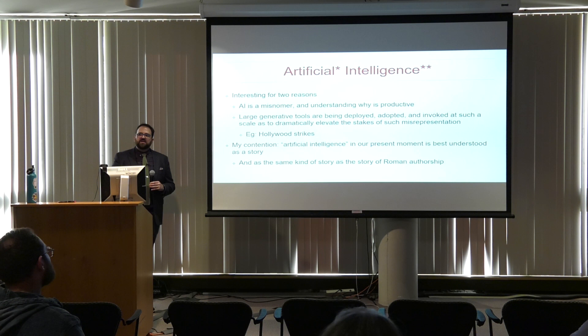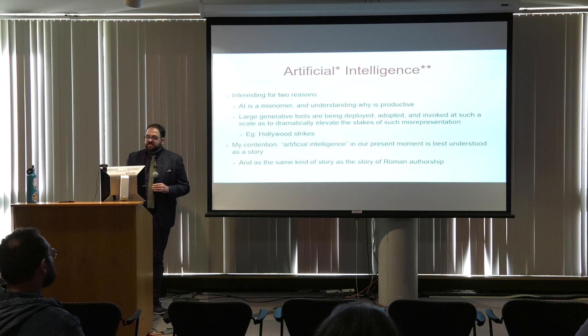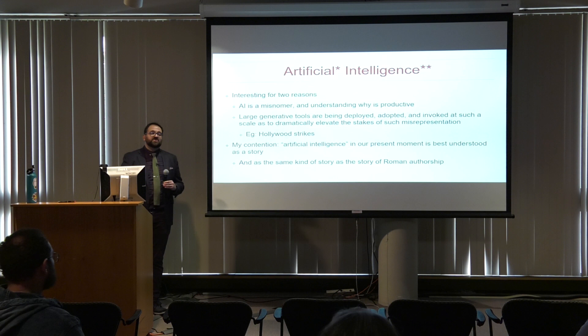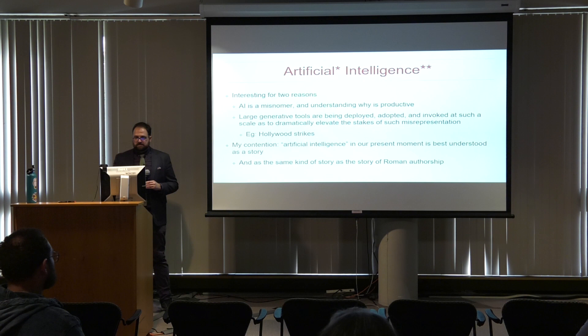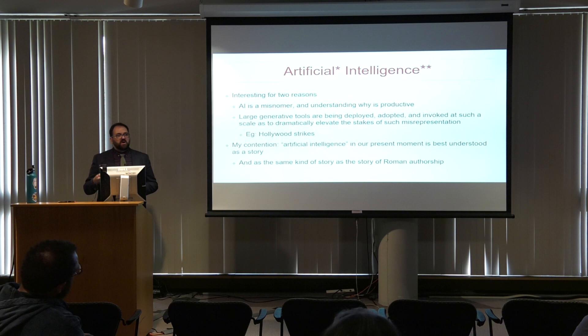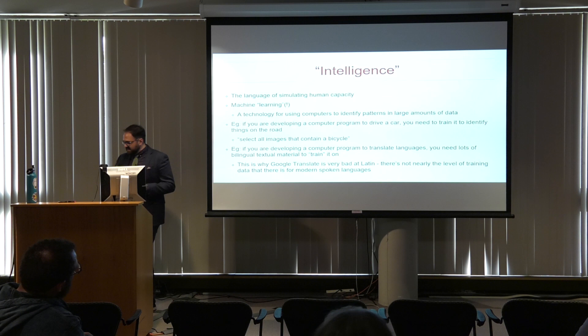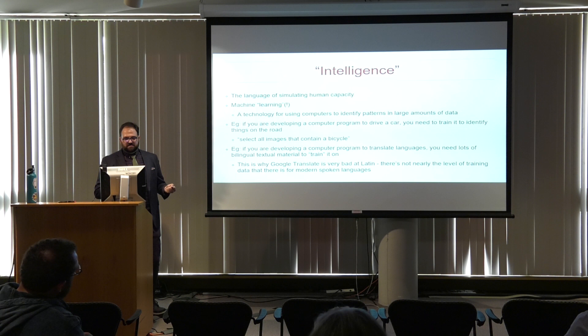Caesar was accustomed to dictate to his secretaries four letters at once on four different topics — you can imagine him with a row of secretaries, walking up and down the line dictating, tracking four different letters in his head. This is truly remarkable. What I think is going on is an idea that the intellect of the great man is so powerful that it exceeds the bounds of its own body — it has to absorb and make use of the bodies of other people.